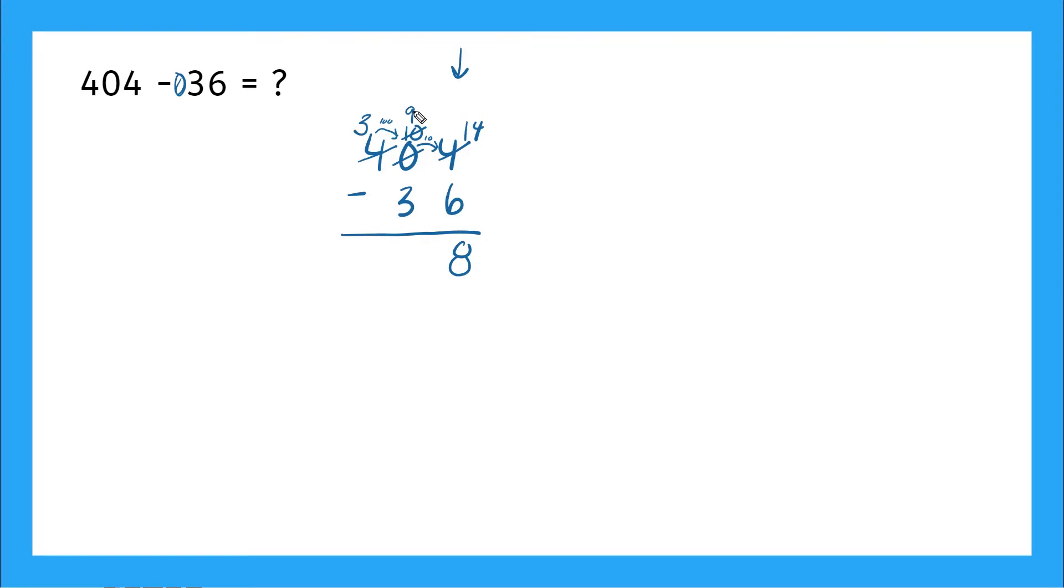And then I have nine minus three, that gives me six. And then I have three minus, there's a zero here, so three minus zero is three. Three hundred and sixty eight is our answer. Good work.